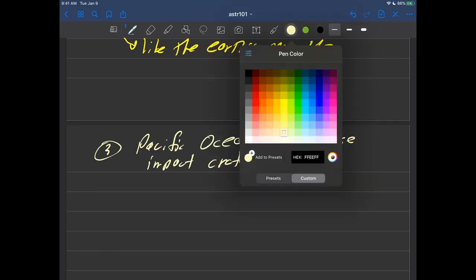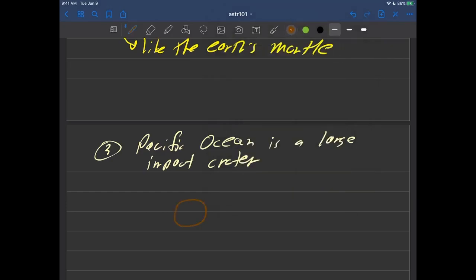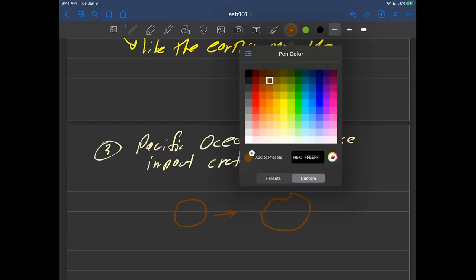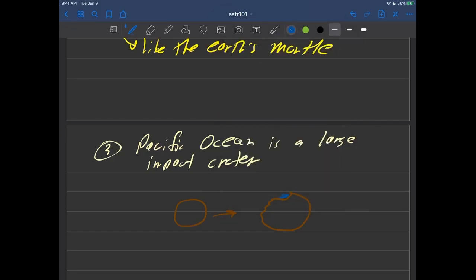So what that sort of means here is that we sort of have our earth here. That looks like this. It turns out the Pacific Ocean, if there was sort of a large sort of crater in the earth like that, and it got filled in with water, something like this, and now it's sort of the Pacific Ocean.